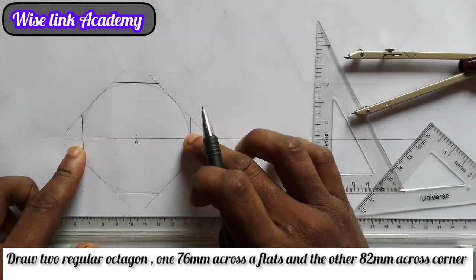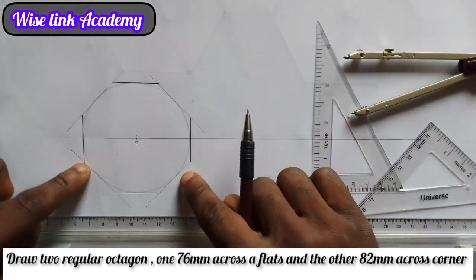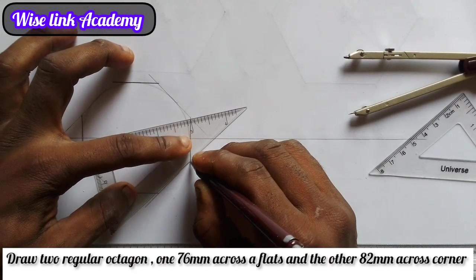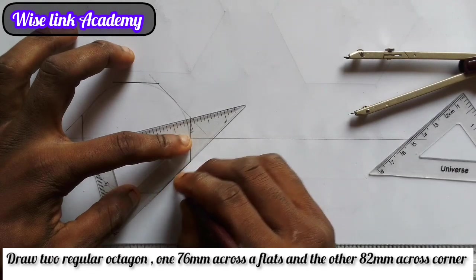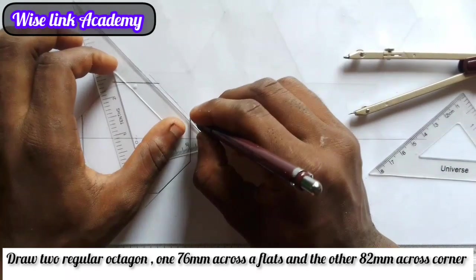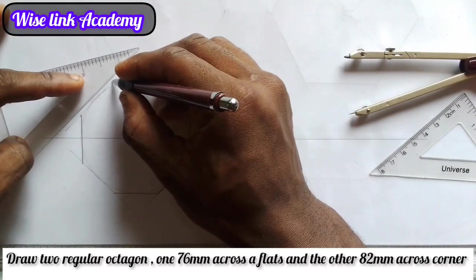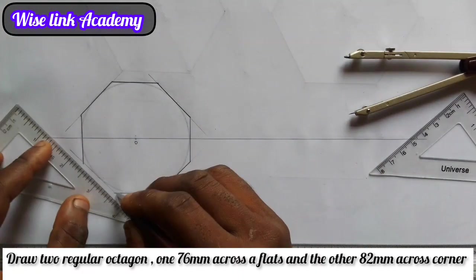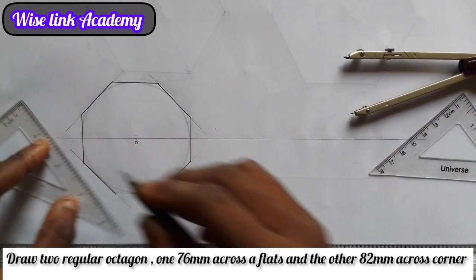So 1, 2, 3, 4, 5, 6, 7, 8. I will thicken all the other parts. From this point here to this point, draw a thick line to close it up. From this point to this point, thick line to close it up. From this point to this point, thick line. From this point to this point, a thick line to close it up.